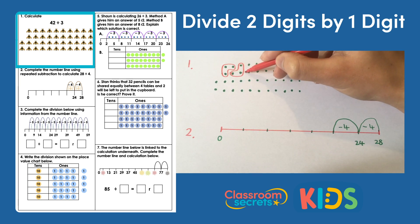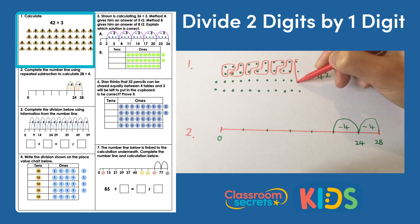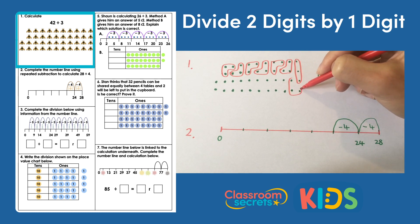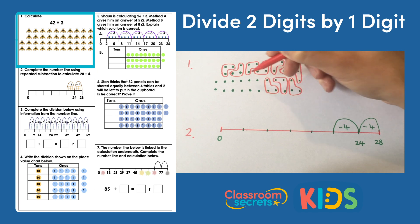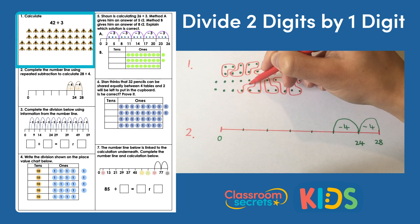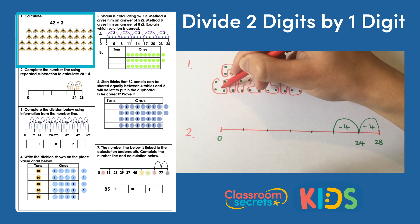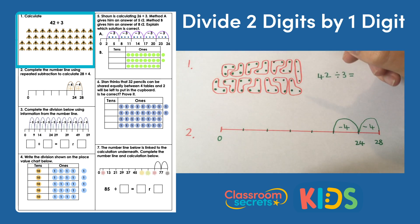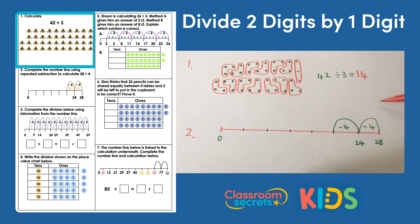There's another group of three. It's about being careful, making sure you always have three dots in each group. Once you've grouped all of those insects or dots, you count how many groups there are: one, two, three, four, five, six, seven, eight, nine, ten, eleven, twelve, thirteen, fourteen. So 42 divided by three is 14, and you get the same answer if you shared out the total of 42.